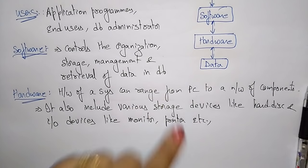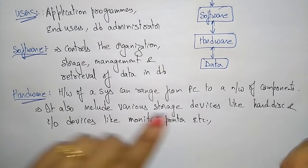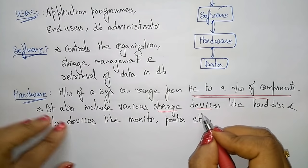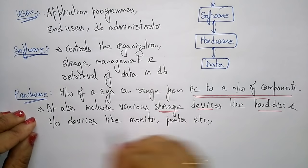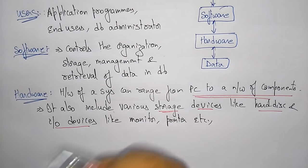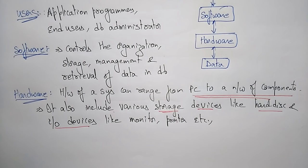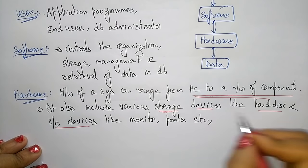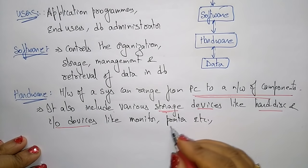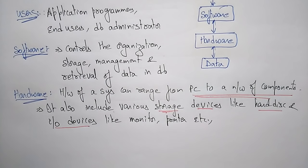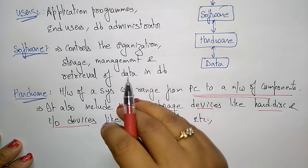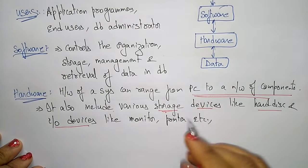Hardware includes storage devices like hard disk and I/O devices like monitor and printer. If you want to communicate with data, we need storage devices to store the data. We also require I/O devices like a monitor to display data on screen, and a printer if you want a hard copy.